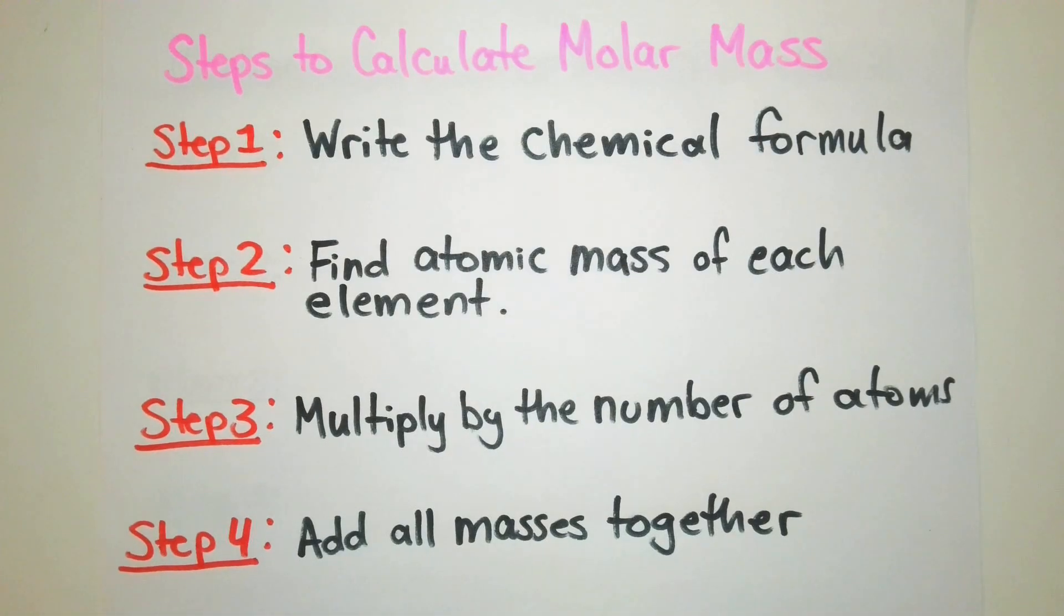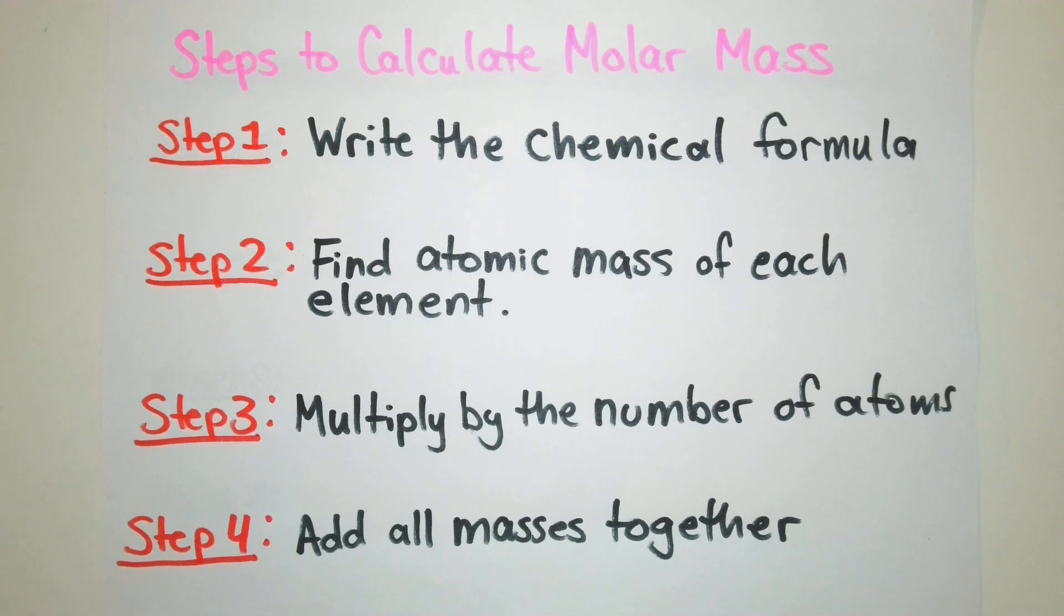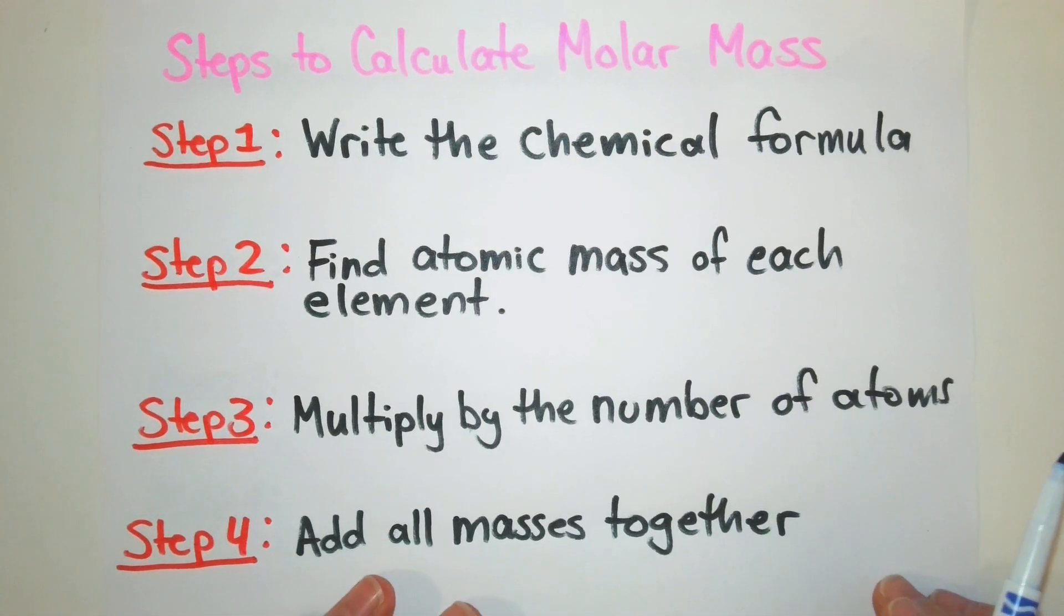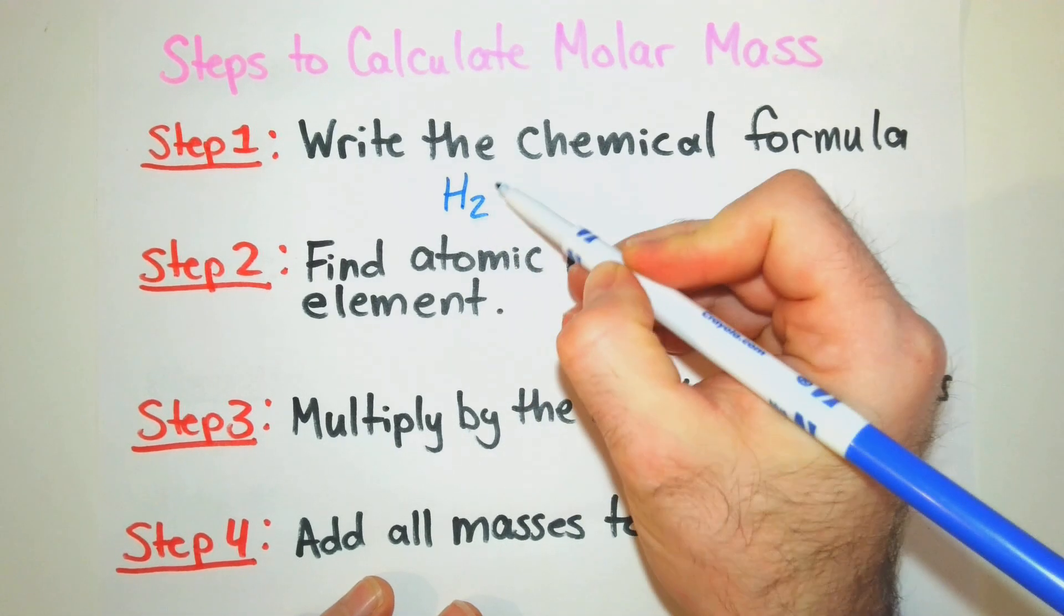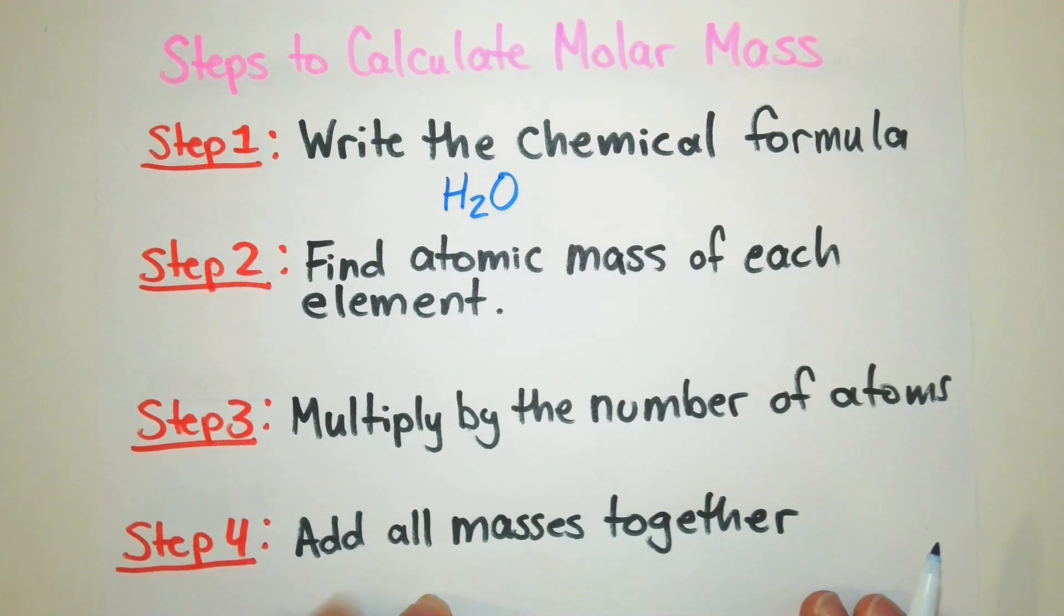So what are the steps to calculate molar mass? The first thing you're going to do is you're going to write the chemical formula. So let's do the molar mass of a very common molecule, water, H2O. We're going to write the chemical formula. After we do that, we're going to find the atomic mass of each element.